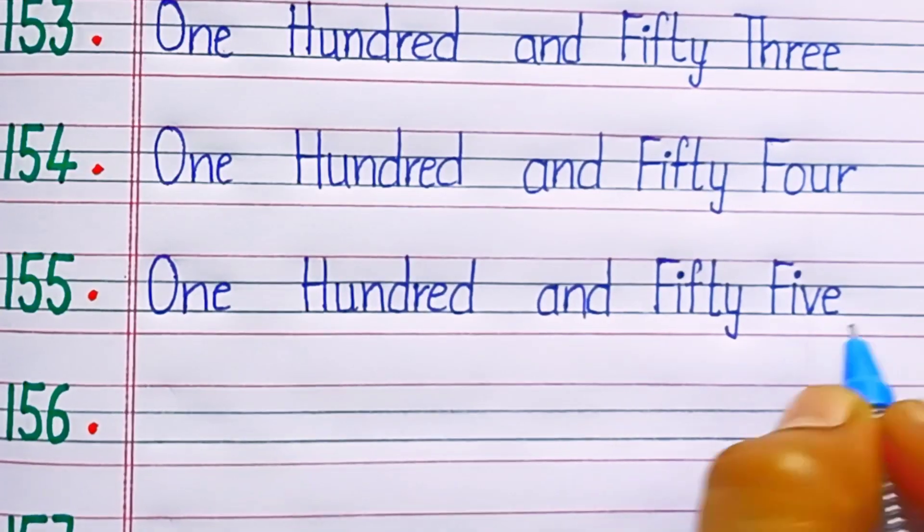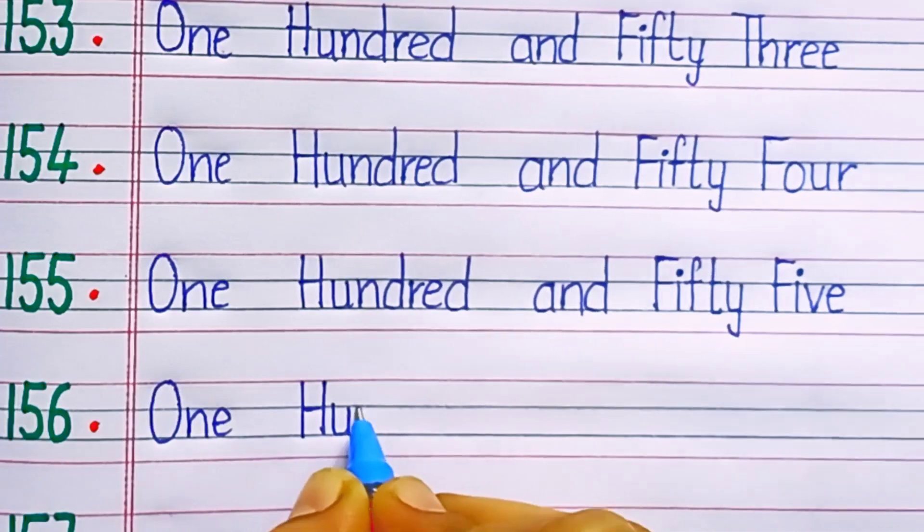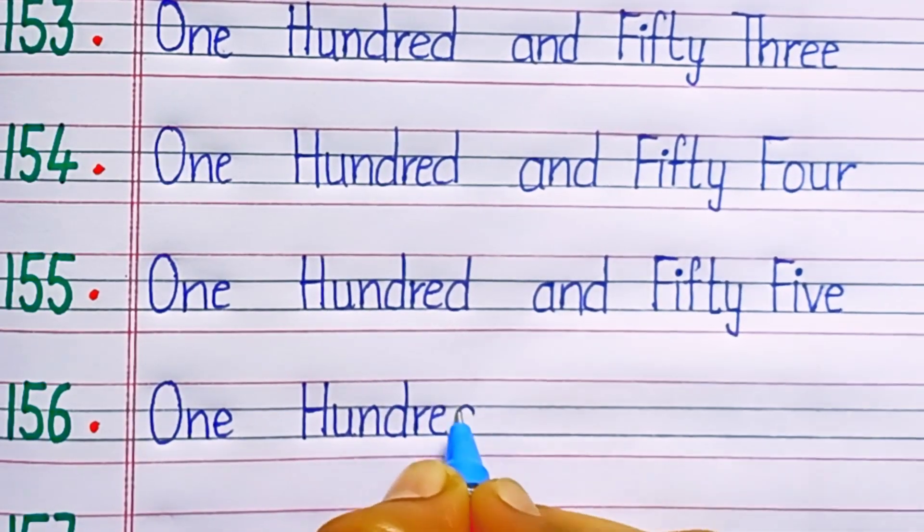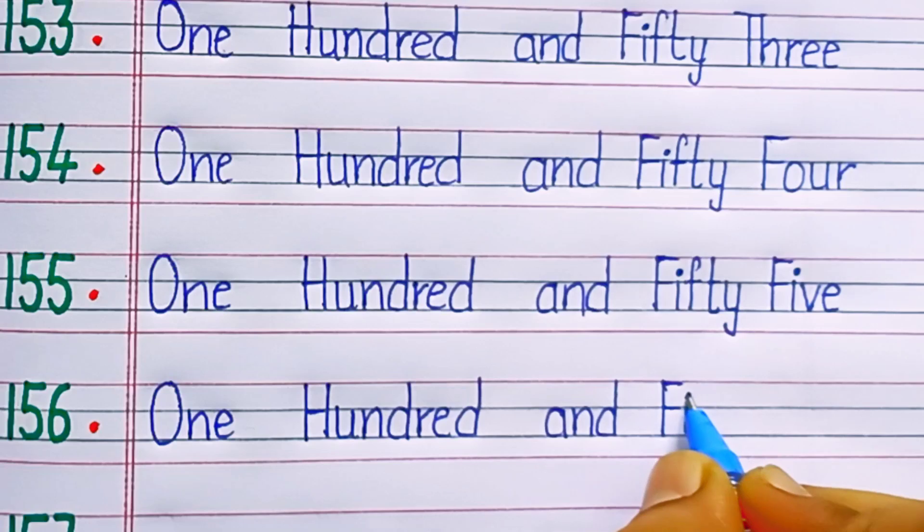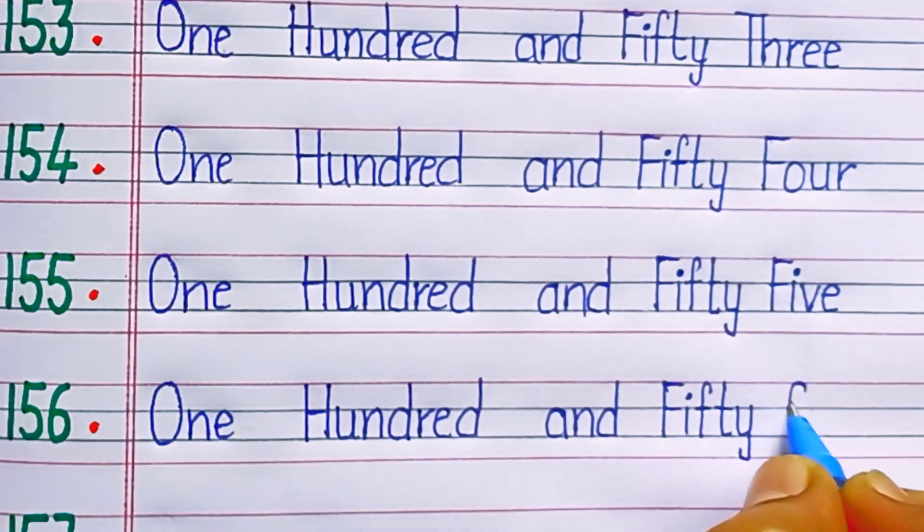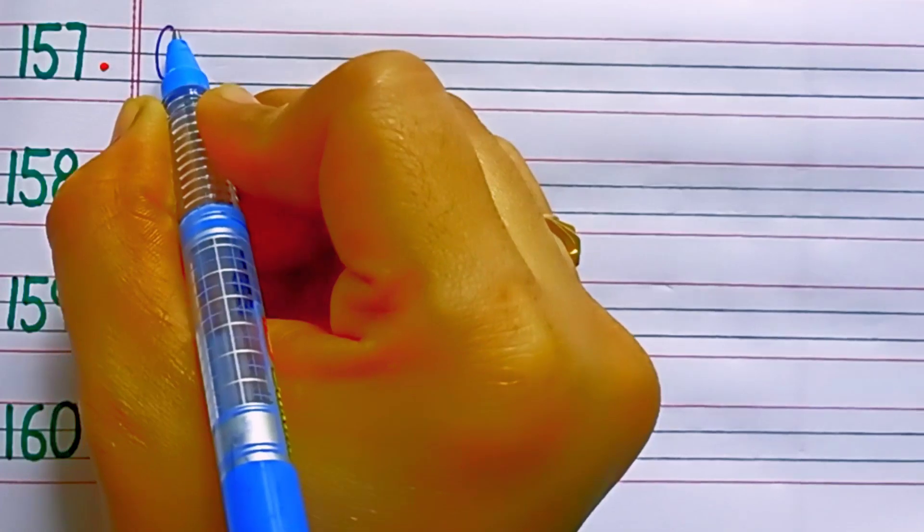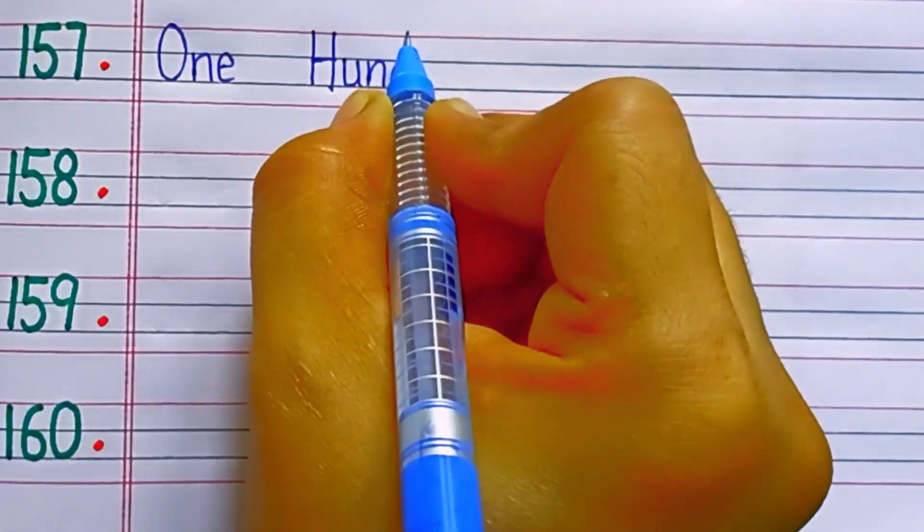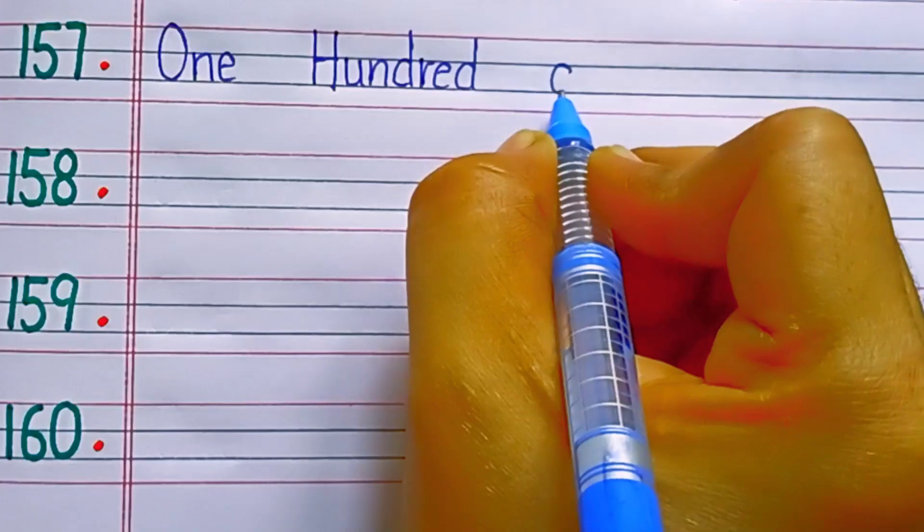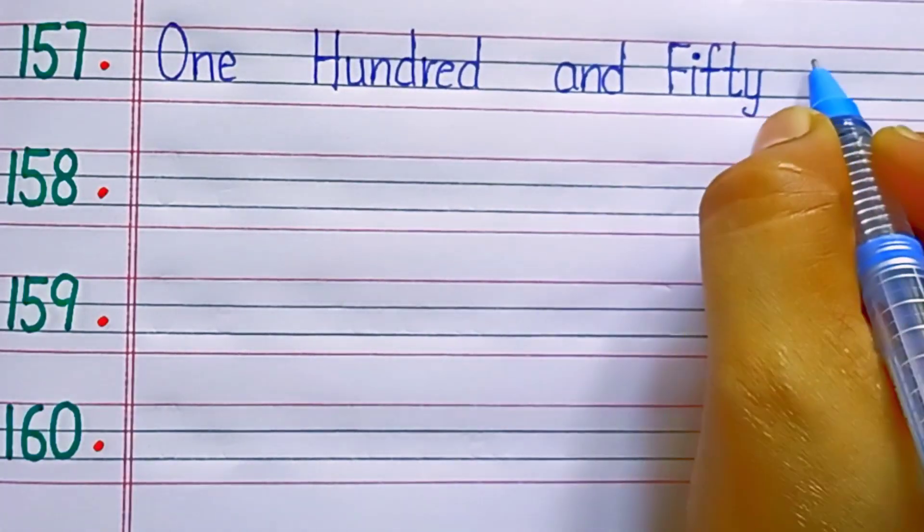One hundred and fifty-six. One hundred and fifty-six. F-I-F-T-Y, 50. S-I-X, 6, 56. One hundred and fifty-seven. One hundred and fifty-seven. F-I-F-T-Y, 50. S-E-V-E-N, 7, 57.